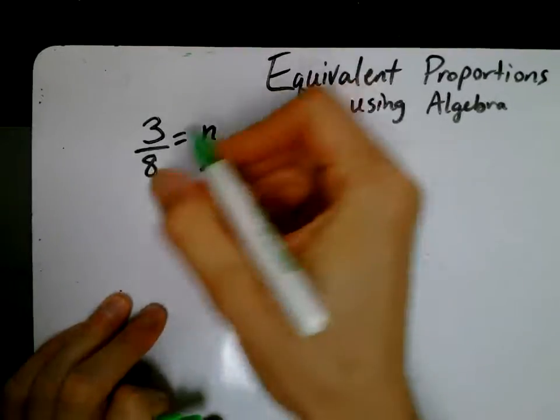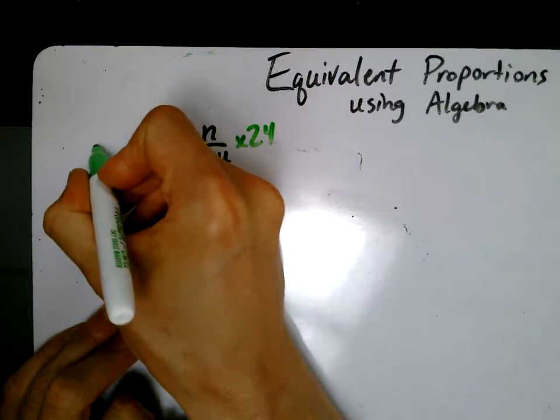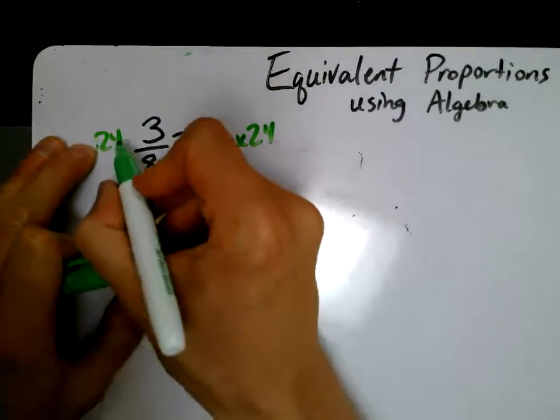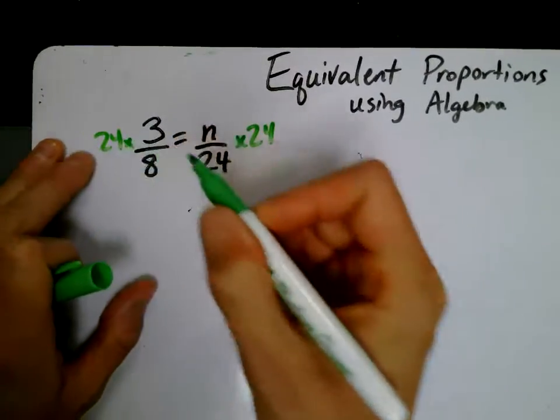So if I multiply both sides by 24, then I'm legal, right? As long as I do the same thing to both sides, it's okay.